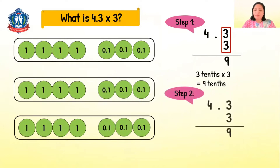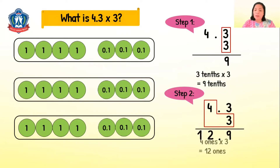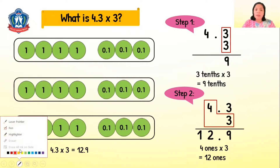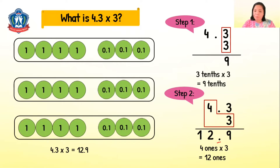Step two: multiply the 4 ones times 3. 4 ones times 3 is equal to 12 ones. Therefore our answer is 12.9. The difference between multiplying whole numbers and decimal numbers is that we use a decimal point in our answer. Since 4.3 has one decimal place, our product also has one decimal place. So the answer is 12.9.